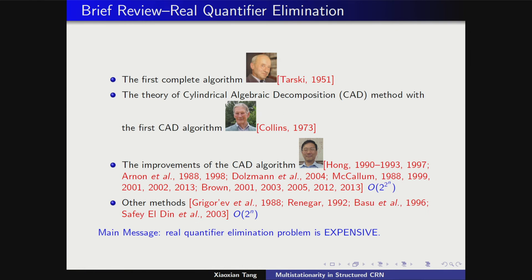The first algorithm for real quantifier elimination was given by Tarski, but unfortunately its complexity is not bounded by any elementary expression in terms of the input. A major breakthrough was the Cylindrical Algebraic Decomposition (CAD) method, and many people are still working on this. However, the complexity of the CAD method is doubly exponential in n, the number of unknowns. In our first example, n includes all parameters h, k, c, and the x variables, so even for a small network n can be large.